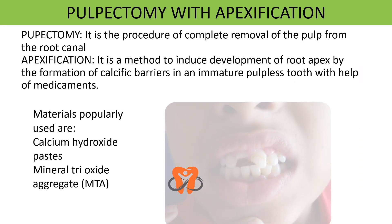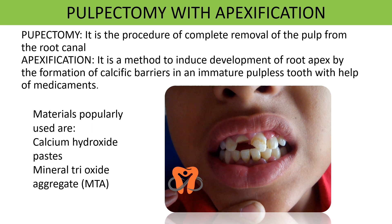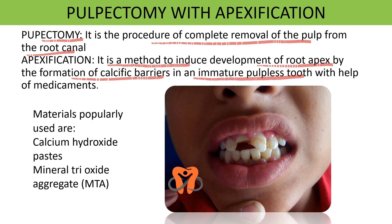Where pulp vitality cannot be preserved, we perform pulpectomy — the complete removal of pulp from the root canal. If the tooth is immature with an unformed root apex, after pulpectomy we perform apexification, which is the method to induce development of the root apex by the formation of calcific barriers in an immature pulpless tooth, using medicaments.